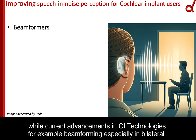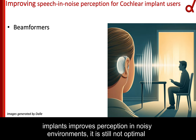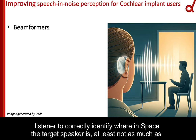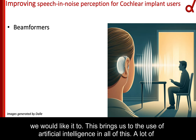While current investments in CI technologies — for example, beamforming, especially in bilateral implants — improve perception in noisy environments, it is still not optimal in everyday life. Beamforming on bilateral users still doesn't help the listener to correctly identify where in space the target speaker is, at least not as much as we would like.